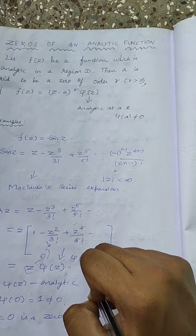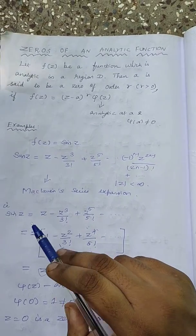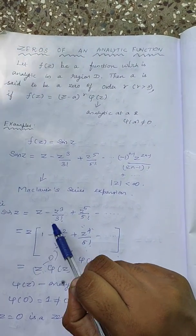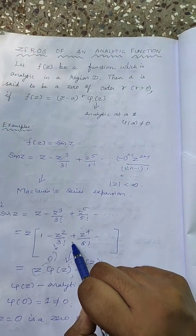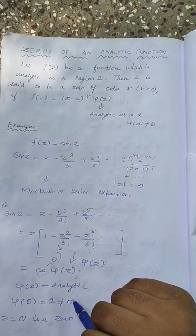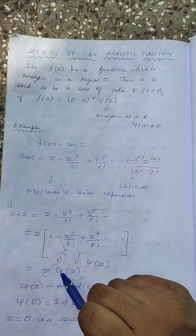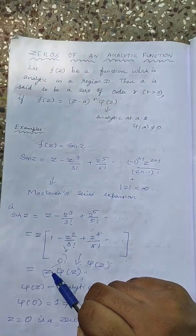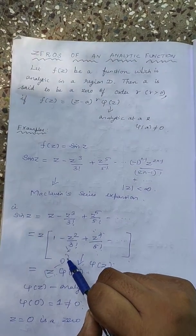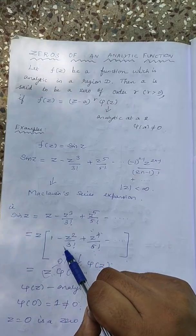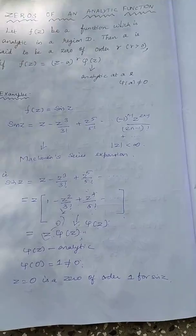Maybe if I take this as Phi of Z, then this function is analytic at Z is equal to 0. So at Z is equal to 0, Phi of 0 is equal to 1 and this is analytic and that is not equal to 0 also. Which means this function is written as Z multiplied by Phi of Z, and Z is nothing but Z minus 0 multiplied by Phi of Z. Therefore I am saying 0 is a zero of sine Z of order 1. This is my first example. Go through this once.